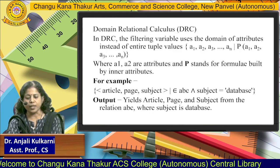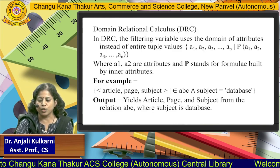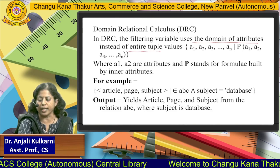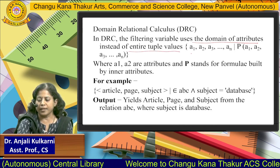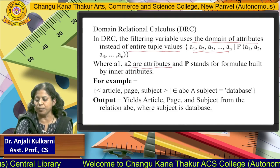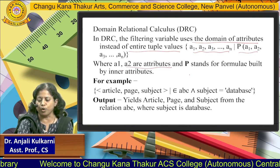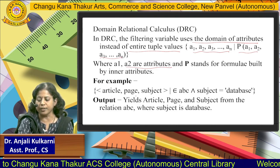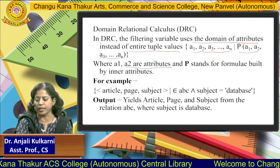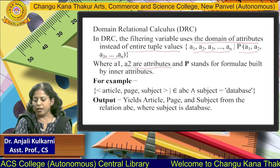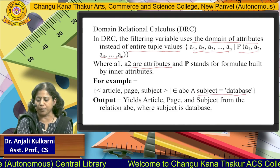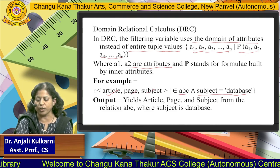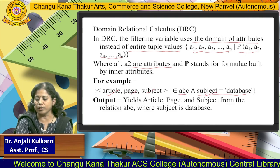The second form is Domain Relational Calculus, where the filtering variable uses the domain of attributes instead of entire tuple values. The notation uses attributes a1, a2, ..., an and P stands for the formula built by inner attributes. For example, {<article, page, subject> | ∃ ABC such that subject = 'Database'} yields article, page, and subject from relation ABC where subject equals 'Database'.